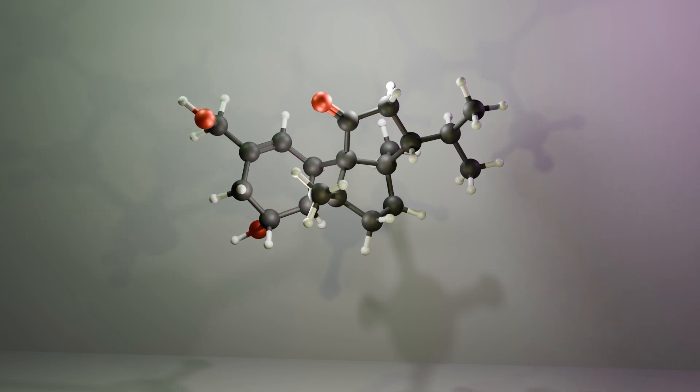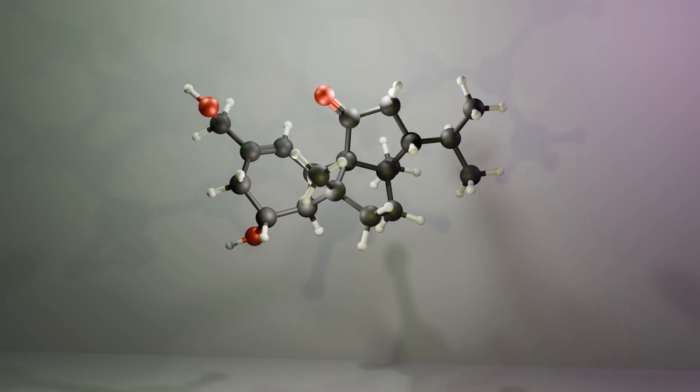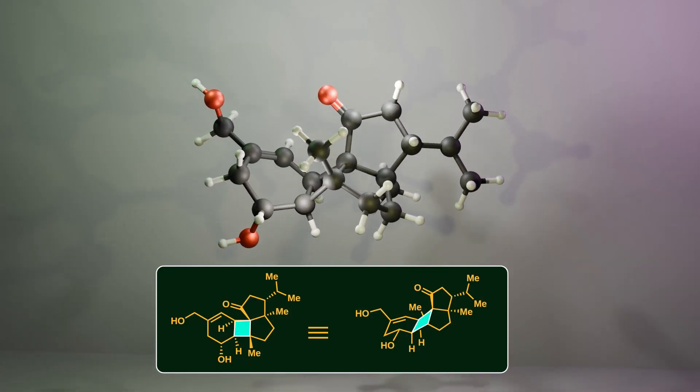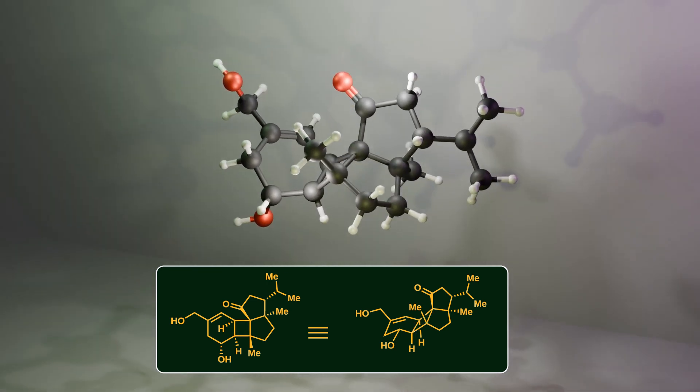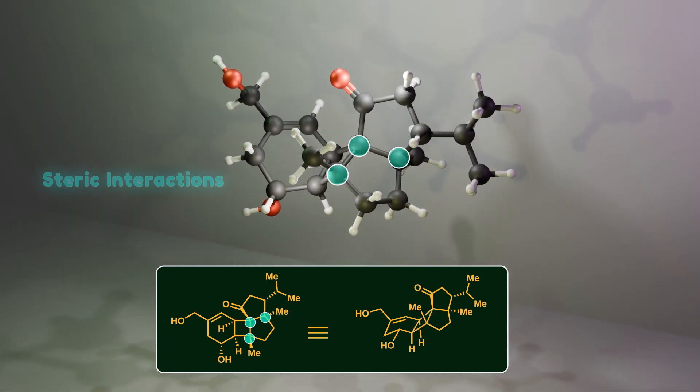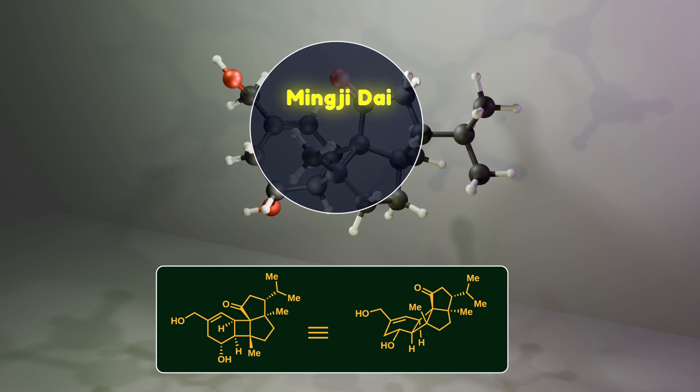Now let's see why these features make it such a challenging target. Obviously, the first challenge is constructing the strained four-membered ring at the center of the molecule, because it's highly substituted and the substituents need to be installed in the correct orientation. The second challenge is the presence of three quaternary chiral centers, which brings in serious steric interactions. Recently, Professor Mingji Dai's group from Emory University introduced an effective approach to overcome these challenges.